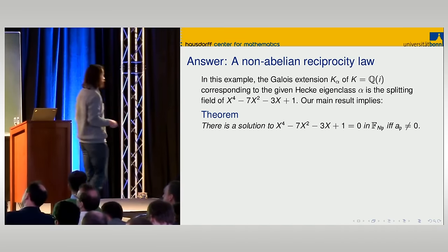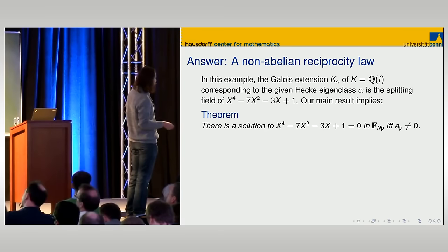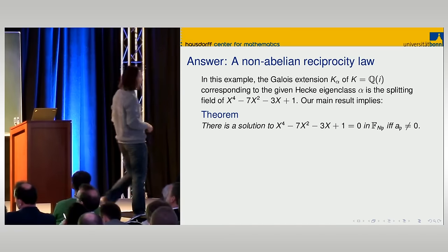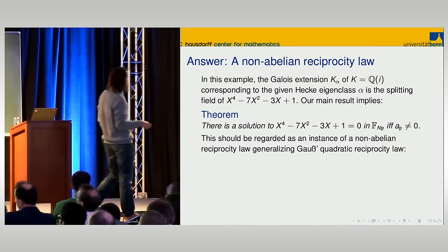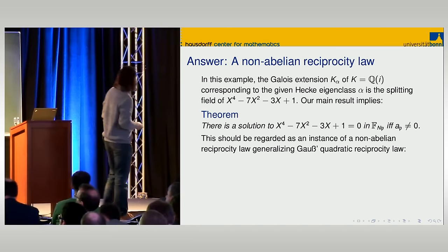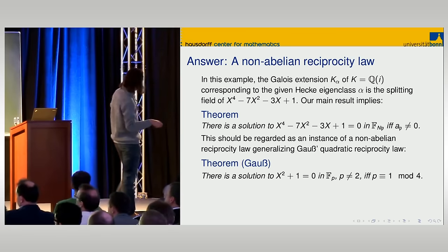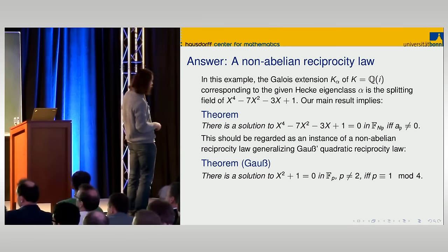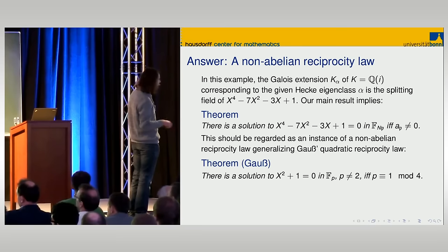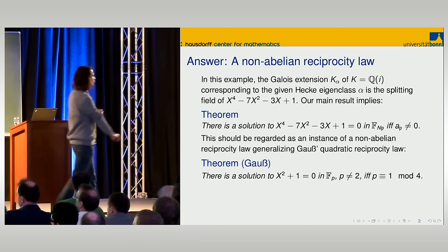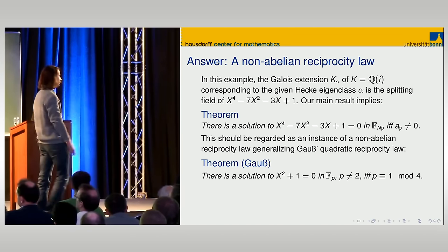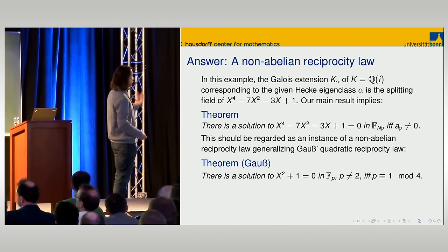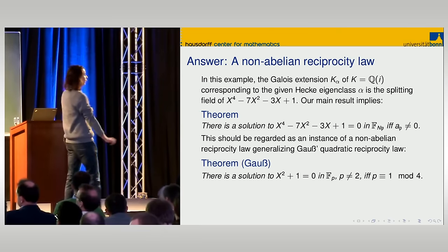The answer is: this is a non-abelian reciprocity law. The Galois extension corresponding to the Hecke eigenclass alpha is the splitting field of this specific polynomial. The main result implies that there is a solution to f(x) = 0 mod p if and only if the Hecke eigenvalue is non-zero. This is an instance of a general non-abelian reciprocity law, generalizing Gauss's quadratic reciprocity: a solution to x^2 + 1 = 0 mod p exists if and only if p ≡ 1 mod 4.